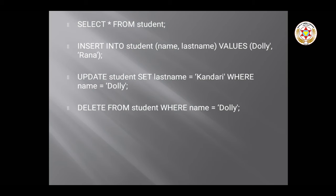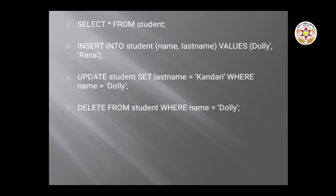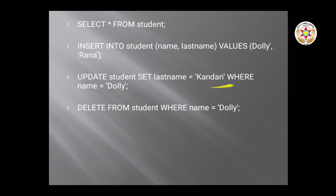The INSERT command syntax is: INSERT INTO student (name, last_name) VALUES ('dolly', 'rana') — this inserts one row into the table. For UPDATE: UPDATE student SET last_name = 'kandari' WHERE name = 'dolly' — this changes the last name from 'rana' to 'kandari' for the record where the name is 'dolly'. For DELETE: DELETE FROM student WHERE name = 'dolly' — this deletes the record of the user named 'dolly'.